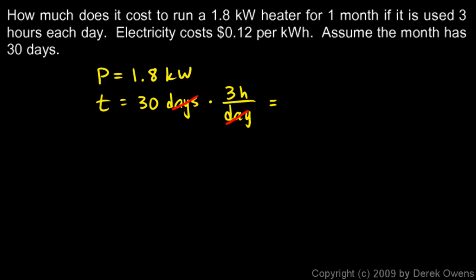So over the course of that 30 days, it gets used for a total of 90 hours. You can see the 30 times the 3 gives us the 90. And then we can find the energy. That's what we're trying to figure out. In order to calculate the cost, we need to know the energy. And the energy is power times time.